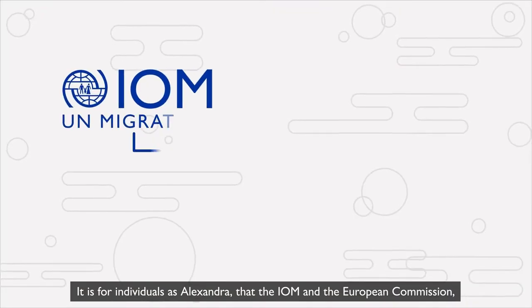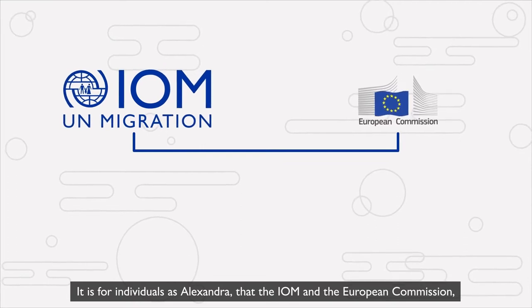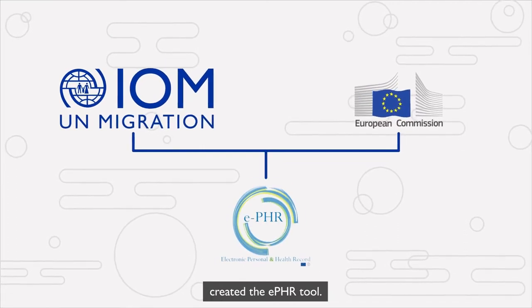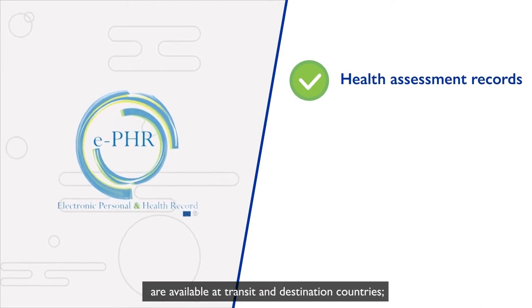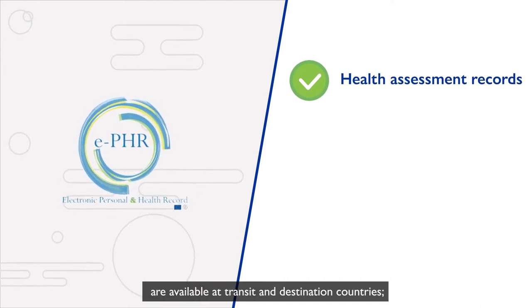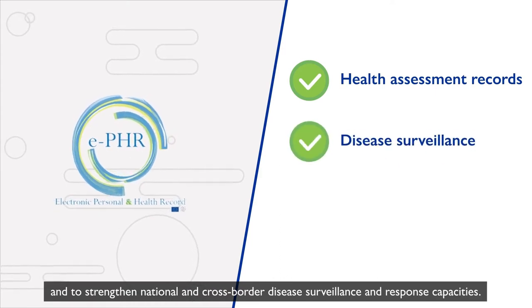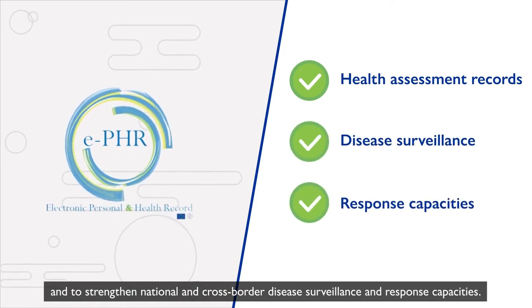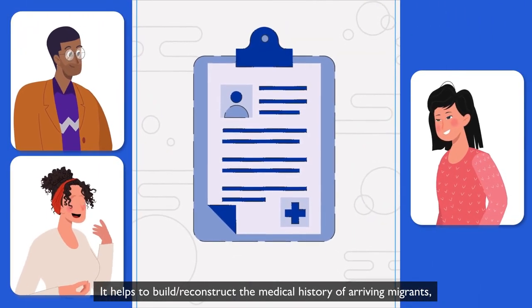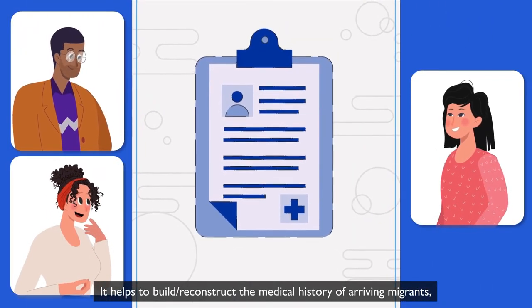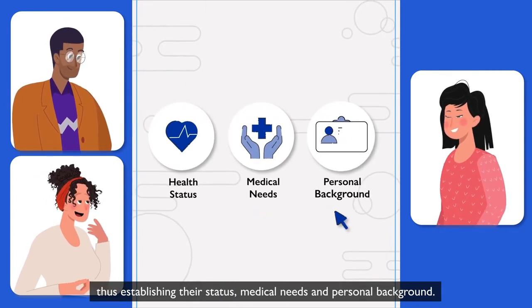It is for individuals like Alexandra that the IOM and the European Commission created the ePHR tool — a tool to ensure that migrants' health assessment records are available at transit and destination countries, and to strengthen national and cross-border disease surveillance and response capacities. It helps to build and reconstruct the medical history of arriving migrants, thus establishing their status, medical needs and personal background.